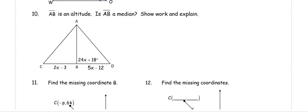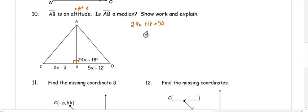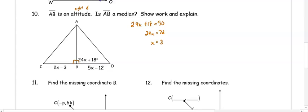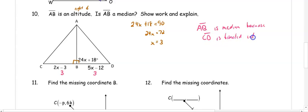In number ten, we have an altitude. An altitude creates a right angle, so: 24X plus 18 equals 90. Subtracting 18 gives 24X equals 72, so X equals 3. To check if it's also a median, we verify the segments are congruent: 2 times 3 minus 3 equals 3, and 5 times 3 minus 12 equals 3. Since CD is bisected into two congruent segments, AB is a median.